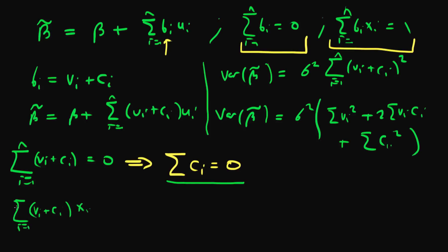We're summing from i equals 1 to n. Writing out the individual terms, that's the sum from i equals 1 to n of vi times xi plus the sum of ci times xi, where again I'm summing from i equals 1 to n.